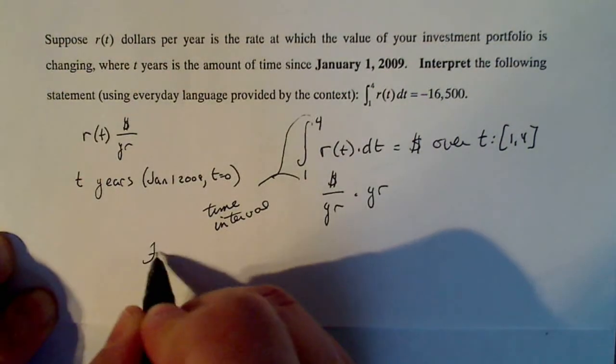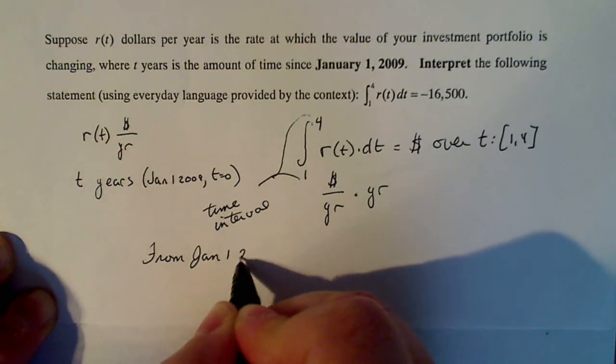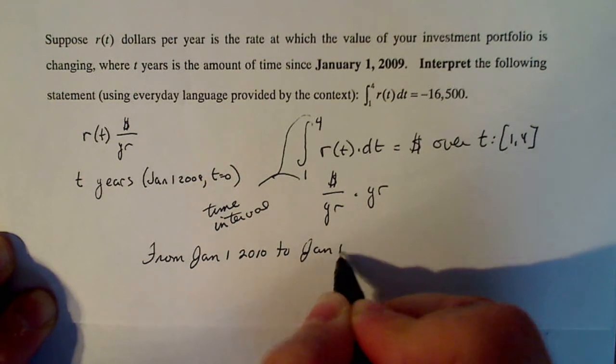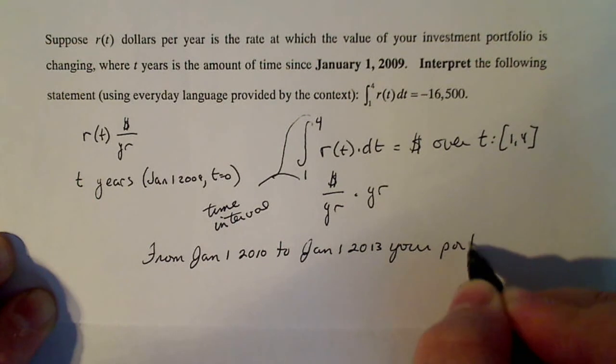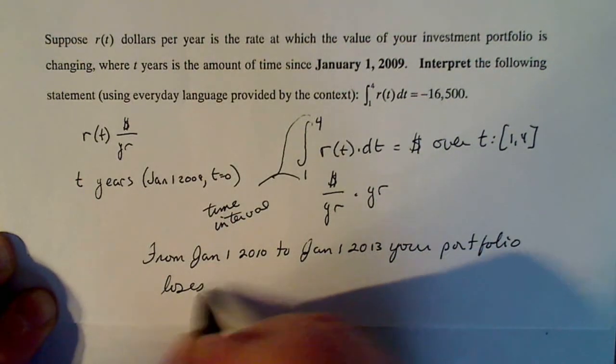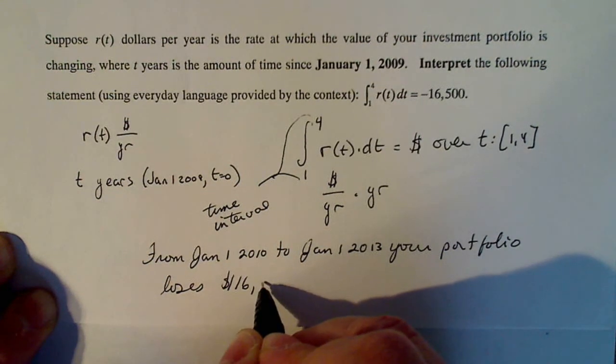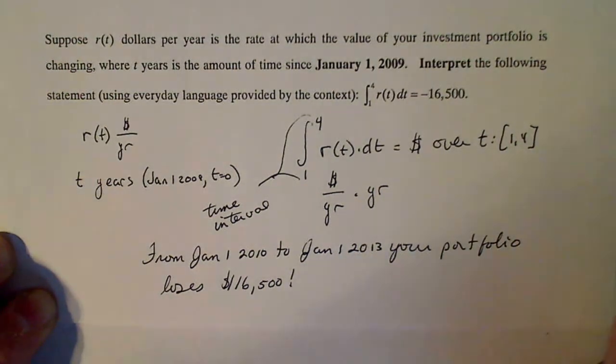So you can say from January 1st, 2010 to January 1st, 2013, your portfolio loses $16,500. And that would be an explanation of that integral in everyday language.